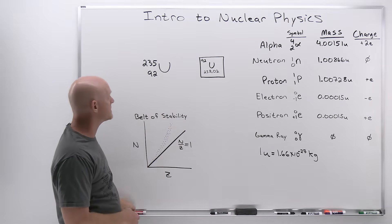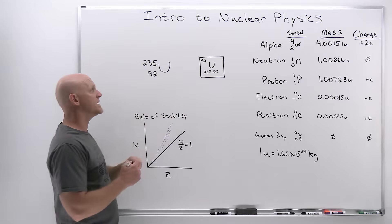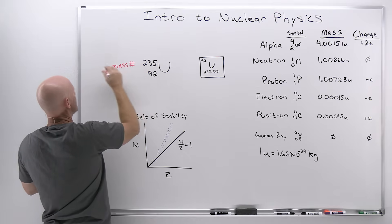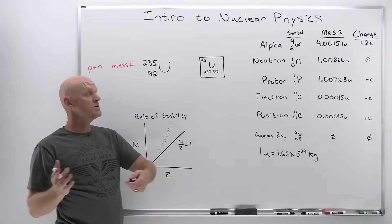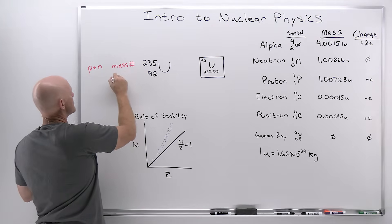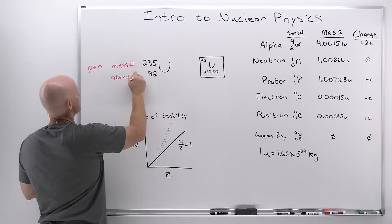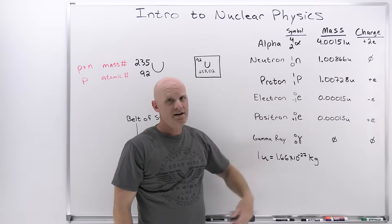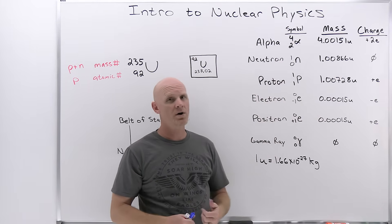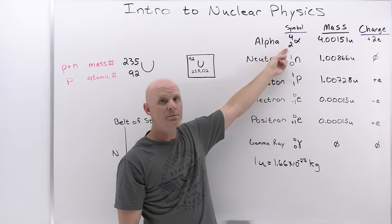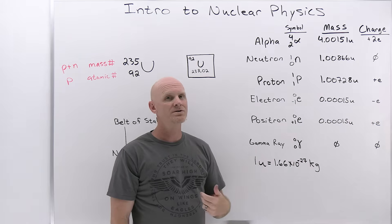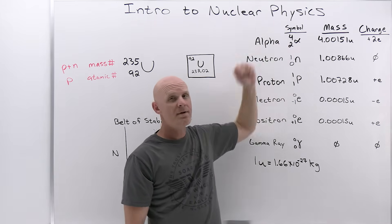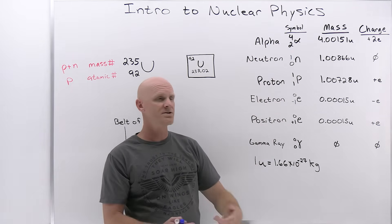With a chemical symbol like this one for uranium, the top number is the mass number, and it's equal to the number of protons plus neutrons in the nucleus. The bottom number is the atomic number, equal to the number of protons. For nuclear particles that have protons, that bottom number corresponds to the number of protons. But if there are no protons, it corresponds to the charge on that particle. The top number is still the mass number — the sum of protons plus neutrons.